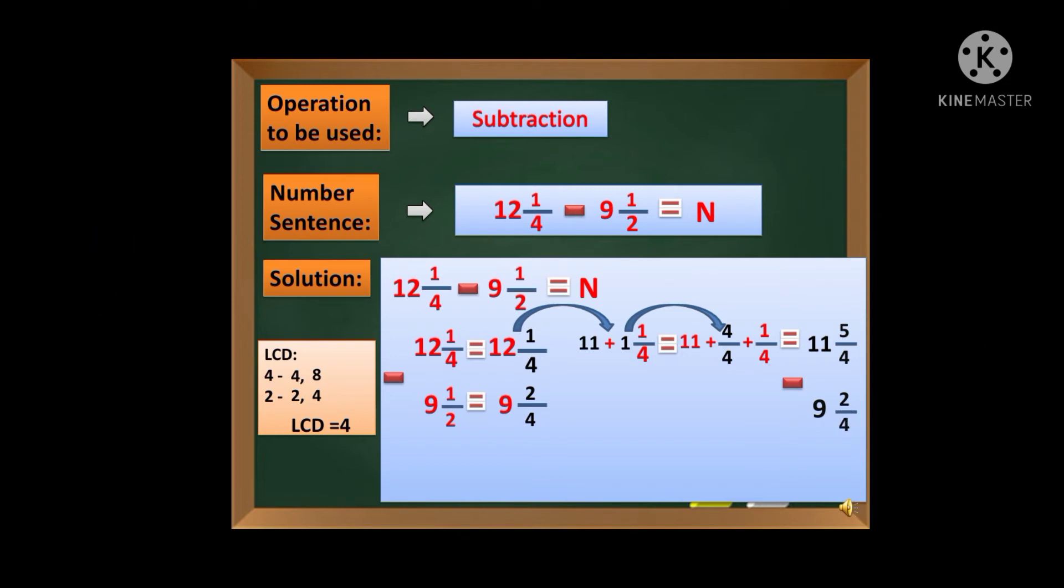11 and 5 fourths minus 9 and 2 fourths, pwede na po ba? Okay, pwede na. So unahin na po natin ang mga whole numbers. So 11 minus 9 is equal to 2, then the numerator 5 minus 2 is equal to 3, then copy the denominator dahil pariyo na po silang 4. So copy the denominator which is 4. So 2 and 3 fourths, nasa lowest term na ba? Yes, so 2 and 3 fourths now is the final answer.